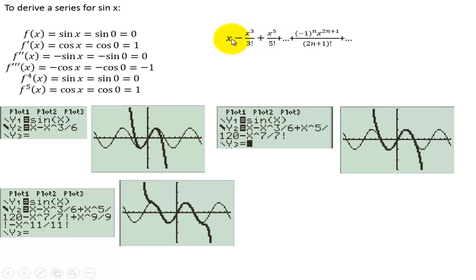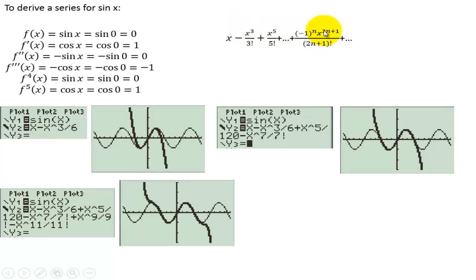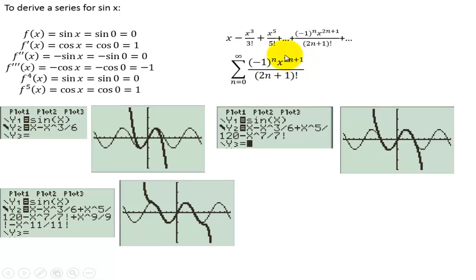The even terms go away because the derivative is 0. The way to remember this is that sine of x is an odd function — if you pick a point on sine of x and go through the origin, you'll find its reflection. It is symmetric over the origin. So being an odd function, we end up with the odd powers. We just have to remember that they alternate signs, so we have negative 1 to the n. In summation notation: n equals 0 to infinity of negative 1 to the n, times x to the 2n plus 1 — because that's how you get an odd number — over 2n plus 1 factorial.